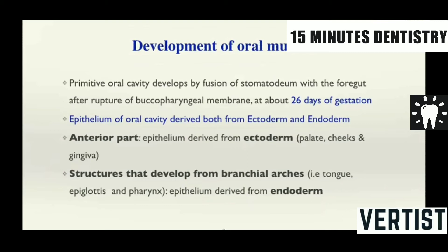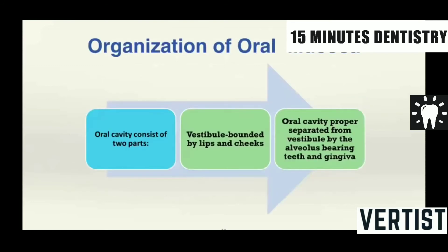The epithelium is derived from ectoderm and endoderm both. The anterior part — the epithelium is derived from the ectoderm, that is the cheeks and gingiva. And the posterior part and mostly those which are arising from the branchial arches. The oral cavity consists of two parts: the vestibular cavity which is bounded by the lips and the cheeks from the outer aspect, and you have the alveolus, the teeth and the gingiva. The oral cavity proper is separated from the vestibule by the alveolus, the tooth-bearing area and the gingiva.